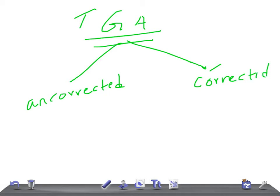In the uncorrected, or DTGA, the classic finding is egg on side appearance. This is very important. The other features will be an enlarged, round heart with pulmonary plethora and narrow pedicle.